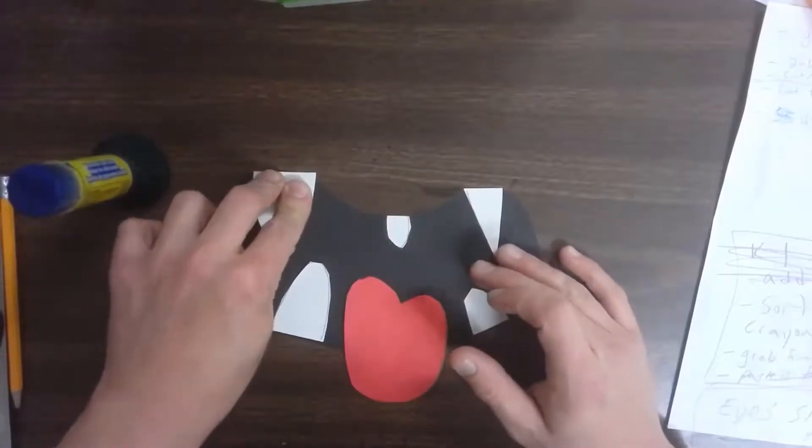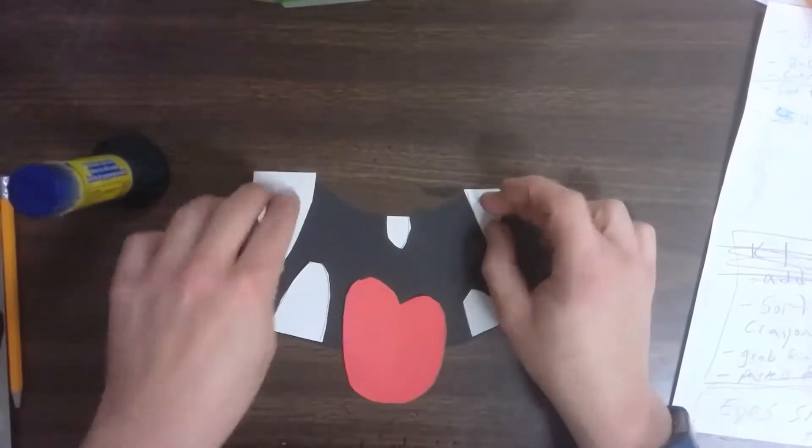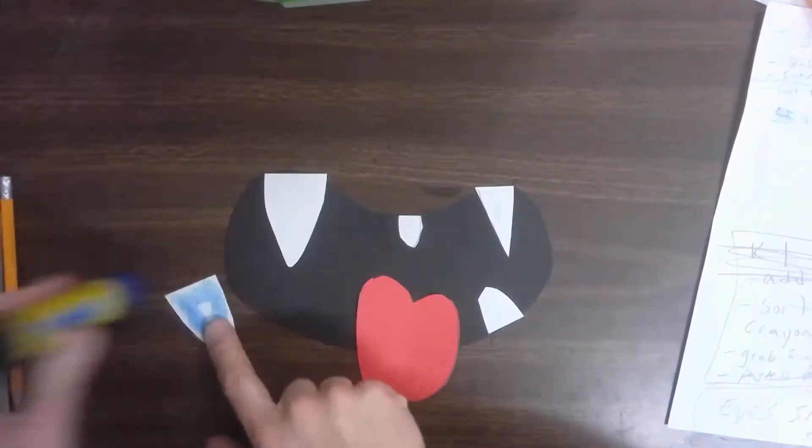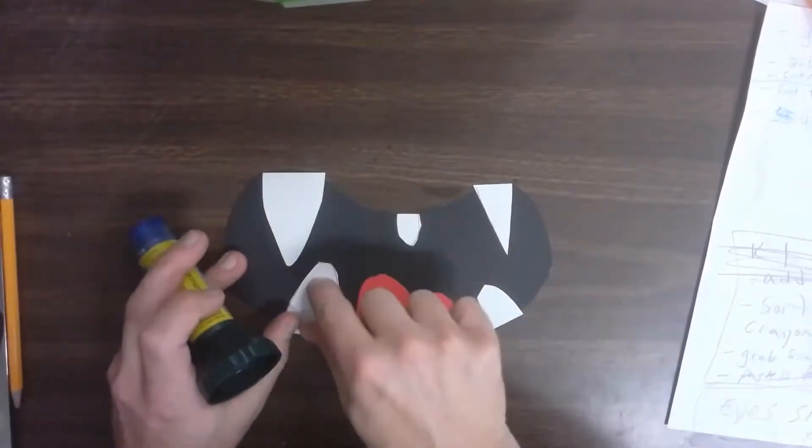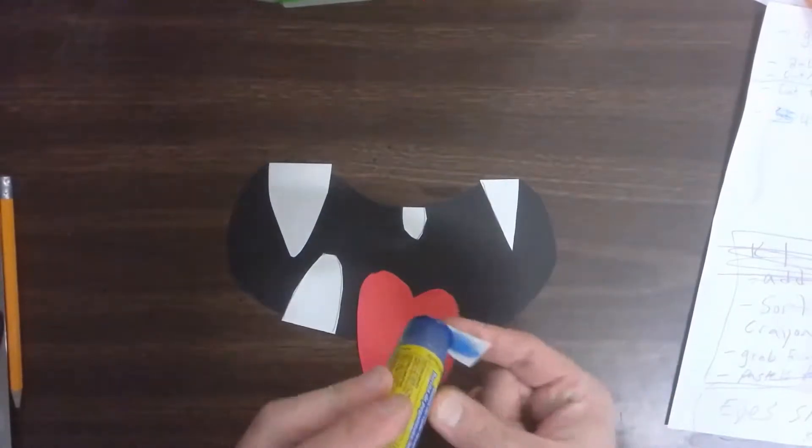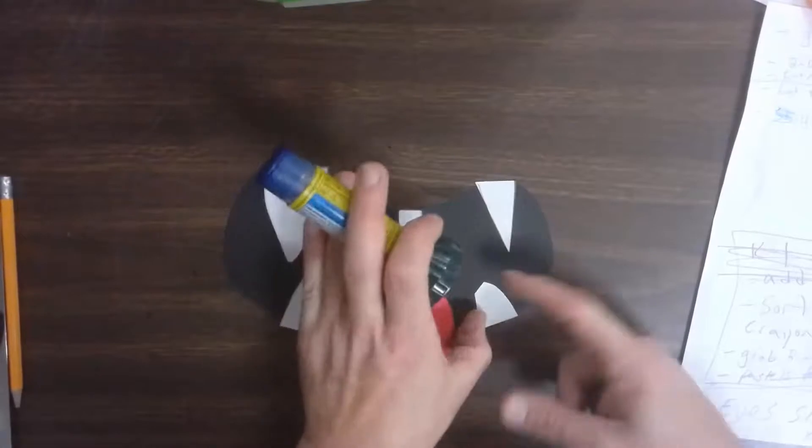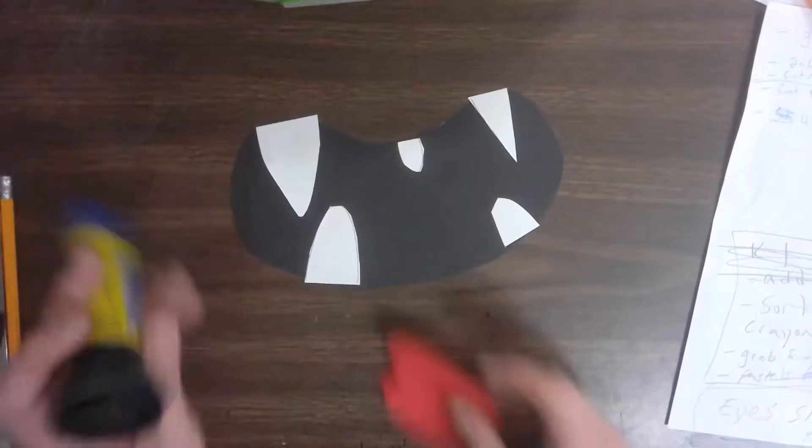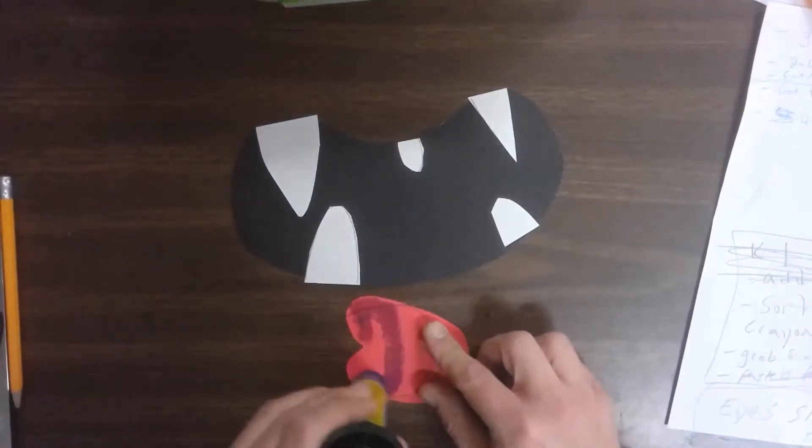Keep on gluing. One, two, three. One, two, three. And you can see my tongue sticks off, so I want to only put glue on the top part there. I don't want to get glue all over my table right now.